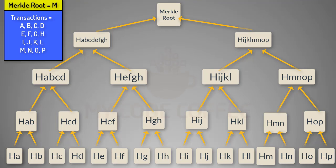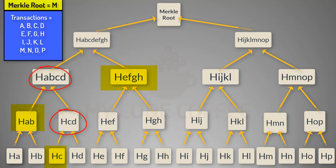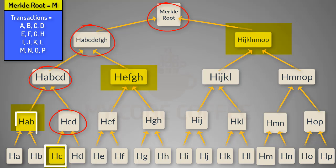But do you really need the remaining 15 transactions to get to the Merkle root? The answer is no — you need much less. Hash of D is HD; you will need HC so that you can concatenate HD and HC and double hash it to calculate HCD. Then you need HAB so that you can concatenate HAB and HCD and double hash it to get HABCD. Continuing up the tree, to prove that transaction D belongs to this block you needed HC, HAB, HEFGH, and HIJKLMNOP — just 4 values to prove 1 transaction out of 16 belongs to this block.